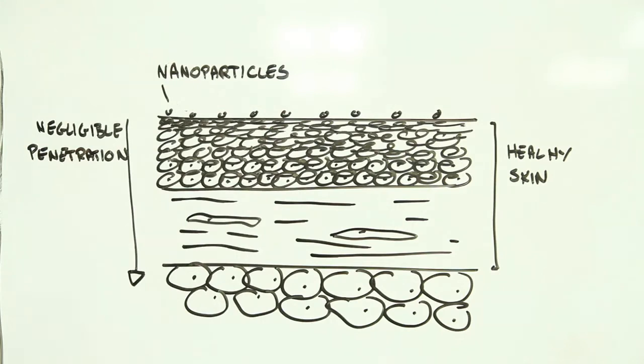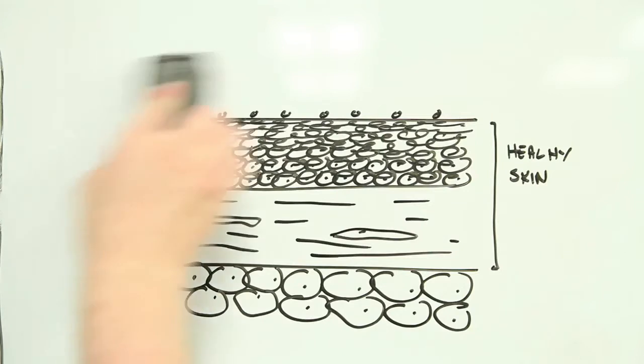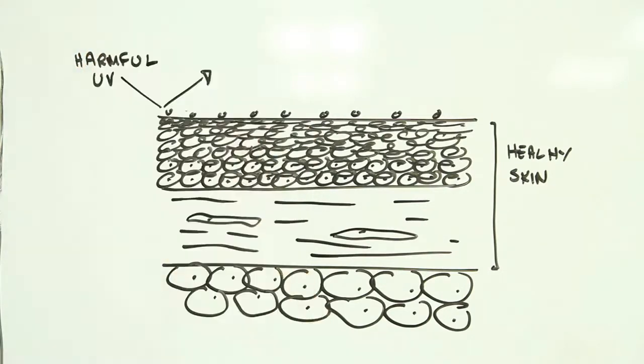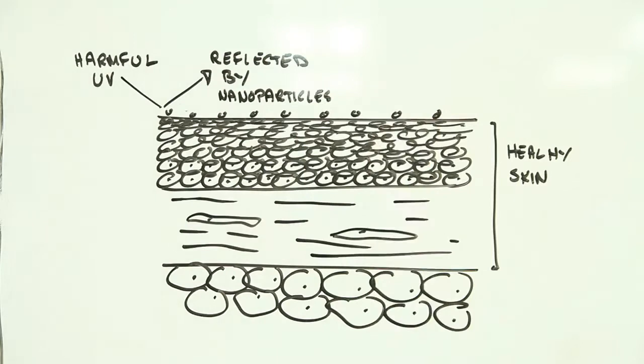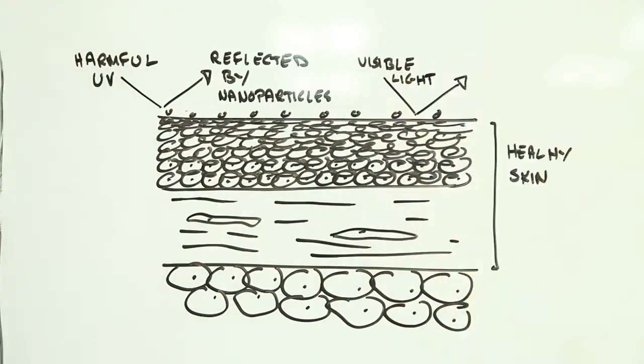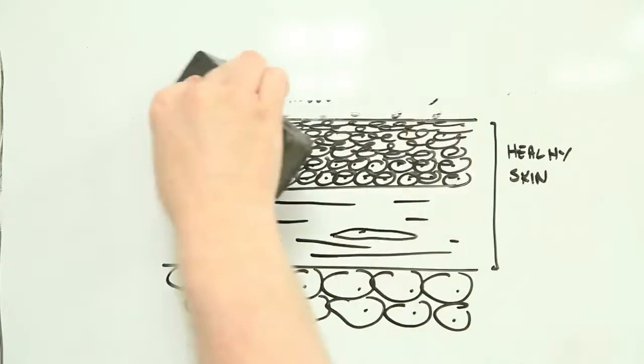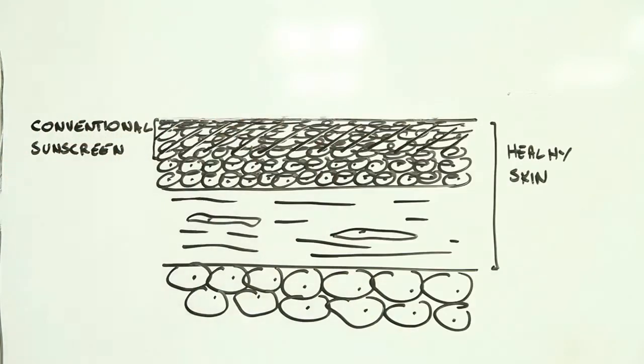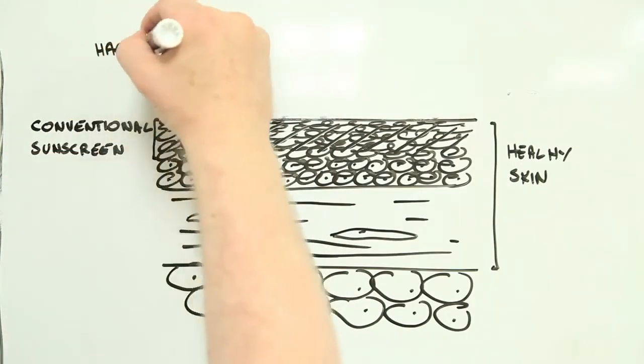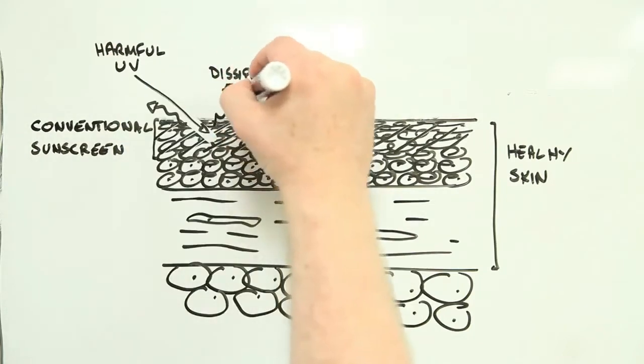Two. Nanoparticles in sunscreens work by reflecting harmful ultraviolet light away from your skin while allowing visible light through. Because of this, they create a barely visible protective barrier, which is great if you'd rather not look like you've just been whitewashed. What's more, they protect you as soon as they've been applied, unlike many of the more conventional sunscreens that need time to settle into your skin before they're fully effective.